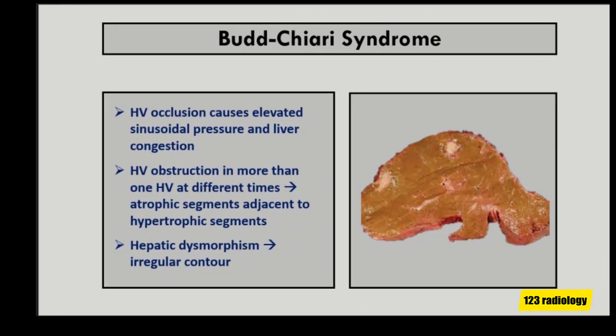Hepatic venous obstruction causes elevated sinusoidal pressure and liver congestion. When hepatic venous obstruction develops in more than one hepatic vein at different time intervals, atrophic liver segments can be found adjacent to hypertrophic segments. The presence of atrophic and hypertrophic hepatic segments is called hepatic dysmorphism.